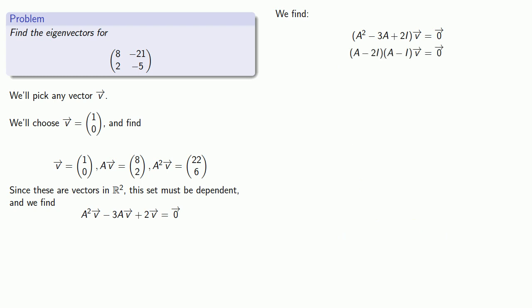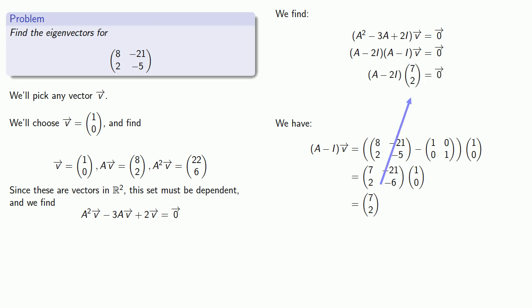Now let's find (A - I) applied to v. So we know what A is, we know what I is. So (A - I) applied to v will be... And we have (A - 2I) applied to (7, 2) gives us the zero vector. And so that means (7, 2) is an eigenvector for lambda equal to 2.